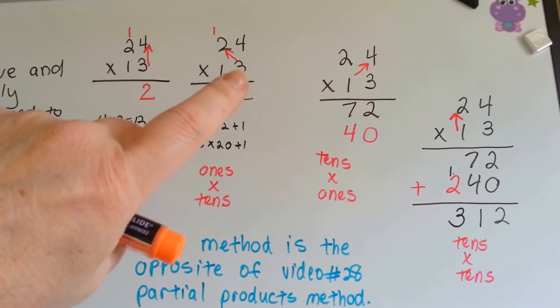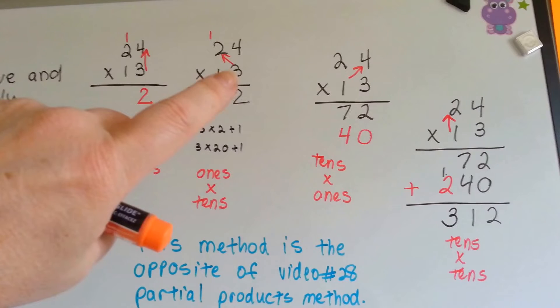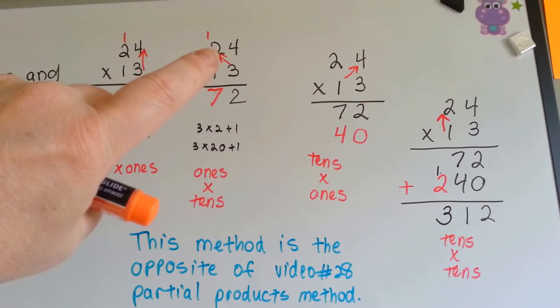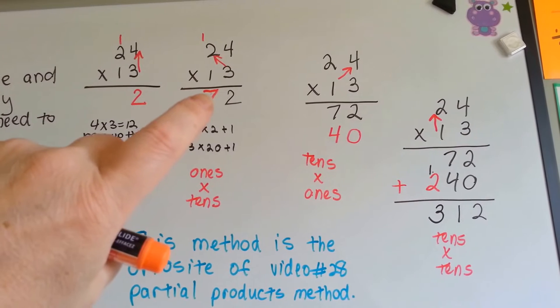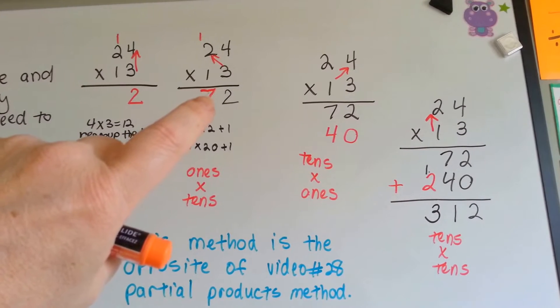Now we're going to multiply the ones to the tens over here. 3 times 20 is 60, plus 1 is 70. So it goes into the tens place value right here as a 7, see?